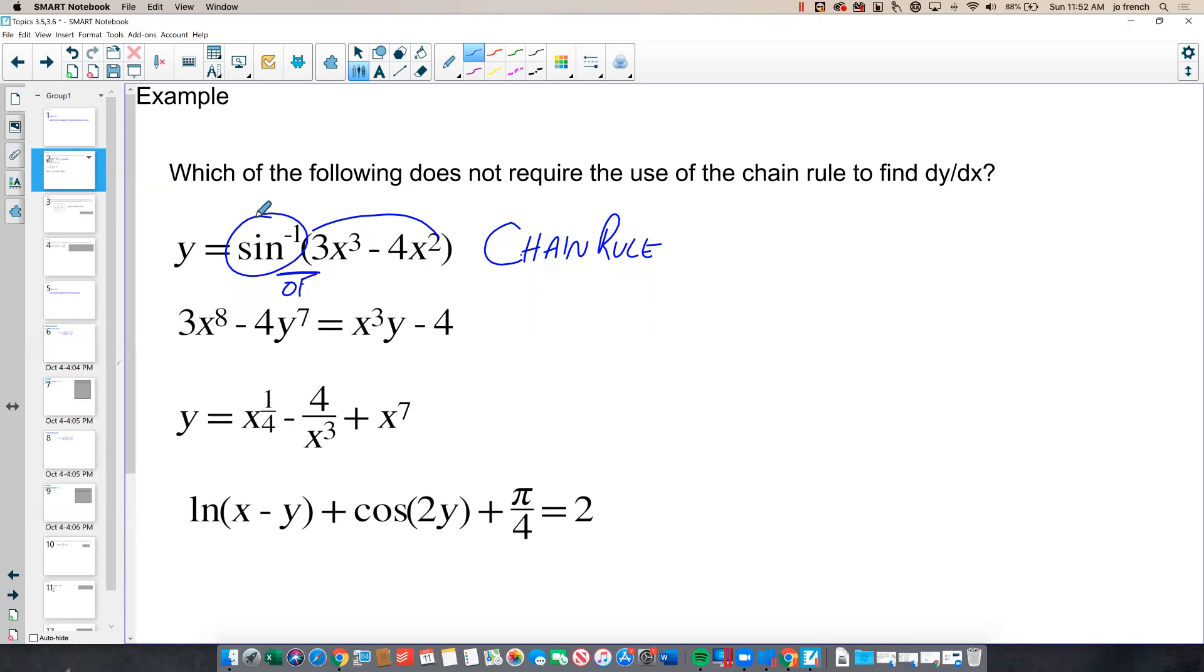In this second example, 3x to the eighth minus 4y to the seventh equals x cubed y minus 4, I would need the chain rule here for this y to the seventh expression. Because y to the seventh is really f of x, an inside function raised to the seventh power.